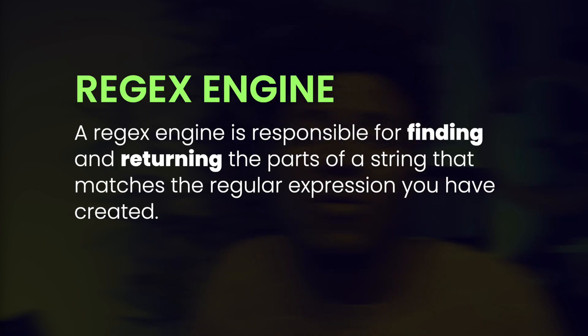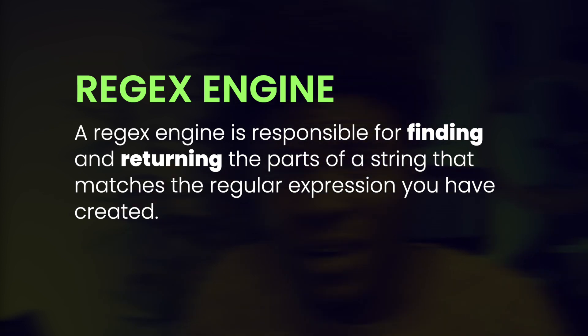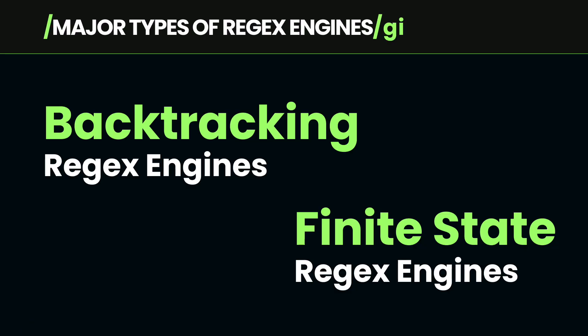A regex engine is responsible for finding the parts of a string that match the pattern you have defined. So they all have regex engines behind the hood which execute the regular expressions or regex patterns that you define. Now, there are two major types of regex engines: the backtracking regex engines and the finite state regex engines. In this course, we're going to focus on backtracking regex engines as that is the most common implementation in programming languages.